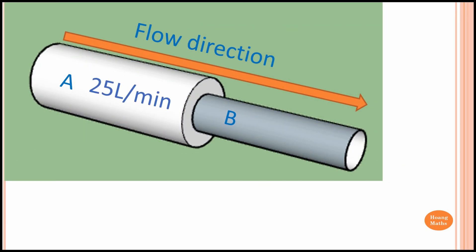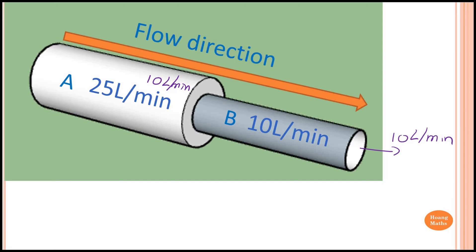Now, part A has a maximum flowing capacity of 25 liters per minute, and B has a maximum flowing capacity of 10 liters per minute. So there is a blockage in part A — the maximum flowing into B is only 10 liters per minute, because inflow cannot be greater than outflow. So the maximum flowing capacity for this pipe is 10 liters per minute. In order to find the maximum flowing capacity, we just look for the smallest value, which is 10 liters per minute in this case.